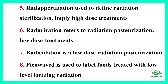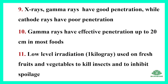The radura symbol is used to label foods treated with low-level ionizing radiation. X-rays and gamma rays have good penetration, while cathode rays have poor penetration. Gamma rays have effective penetration up to 20 centimeters in most foods.